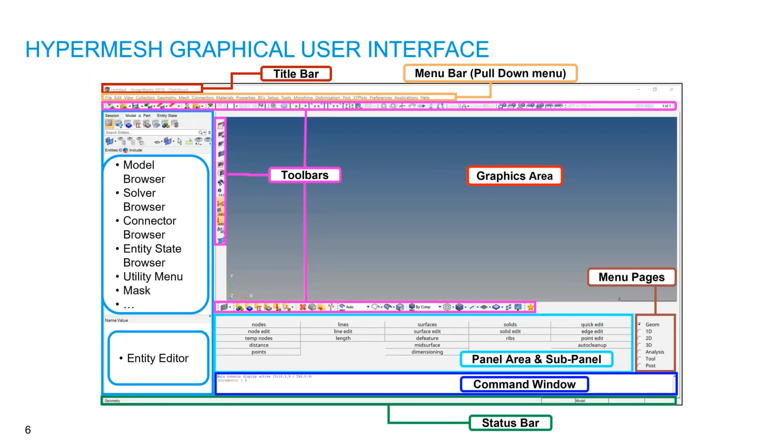This is the graphical user interface. It contains the title bar, menu bar, toolbar, graphics area, menu pages, entity editor, panel area, command window, and status bar.